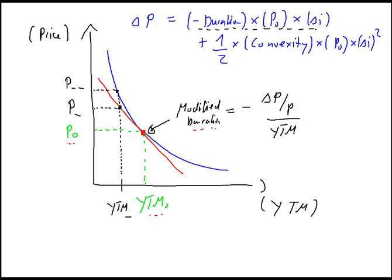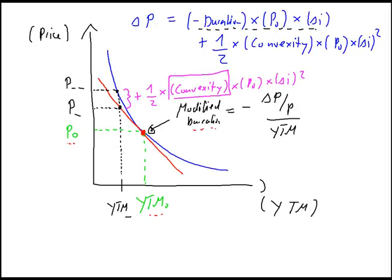To come up with the price we can observe in the market, we have to add one-half times the convexity, times the bond price, times the change in the level of interest rates squared — or in short, we have to add the convexity term. So, if interest rates fall, then we will underestimate the price change using duration, because the price change is obviously higher than the one measured with duration alone.